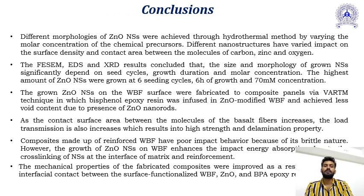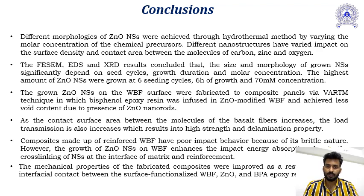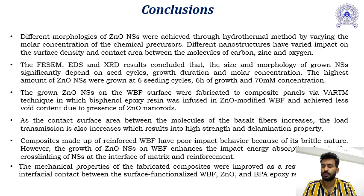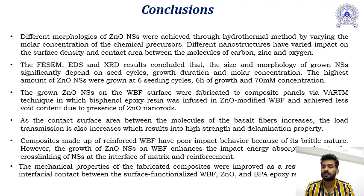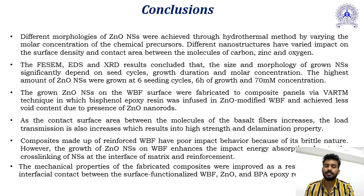In conclusion, different morphologies of ZnO can be developed by hydrothermal method on different fabrics. Different characterization techniques give various aspects of the grown nanostructures. The highest amount of ZnO structure was grown at 6 seeding cycles, 6 hours of growth treatment, at 70 millimole concentration. As contact surface area between molecules increases, load transmission also increases, improving high strength and delamination properties. Composites made of reinforced woven basalt fiber have poor impact strength due to brittle nature, but with increasing nanostructure, brittle nature is reduced and cross-linking of nanostructure increases the interfacial parameter.